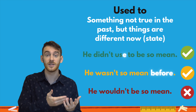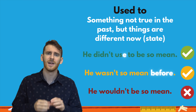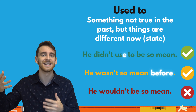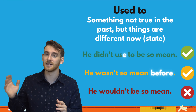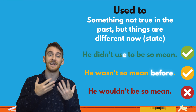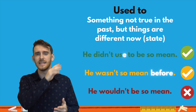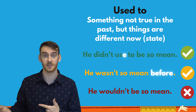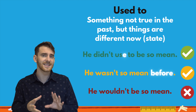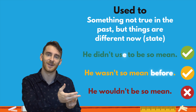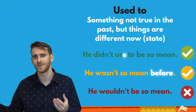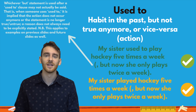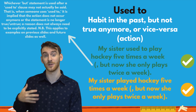'Used to' can also be used in the negative for something that was not true in the past. For example, 'He didn't use to be so mean.' Note that there's no D here — we take it off for the negative. That means before he was a nice guy, but now he's not nice. The same thing with questions — we take out the D and say, for example, 'Did they use to have a shopping center here?' So that's something you're asking whether they used to have it there, as opposed to now when they don't.